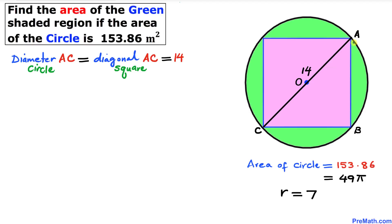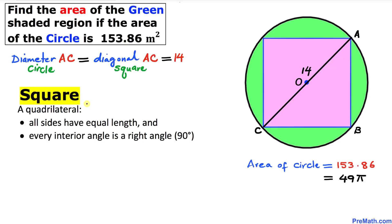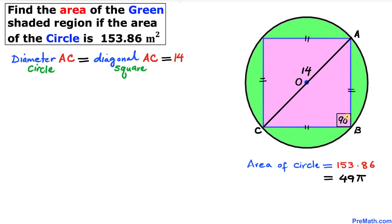AC is the diameter of this circle and also the diagonal of the square. Therefore the diagonal of the purple square is 14 meters. Recalling that a square has all equal sides and every interior angle is 90 degrees, since AC is the diagonal, the angles it creates are each 45 degrees.